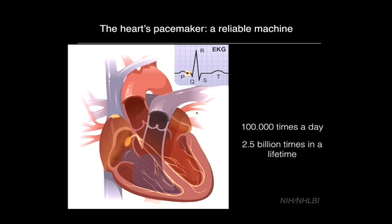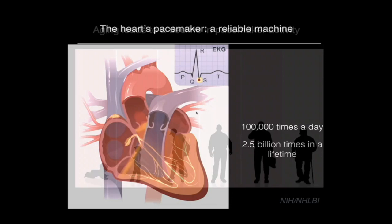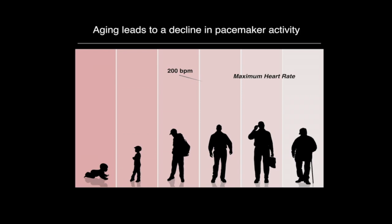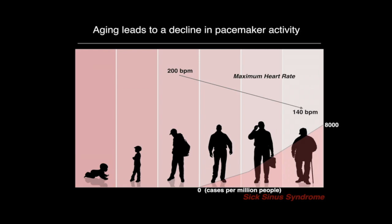This is a very reliable tissue, but unfortunately not exempt from the deleterious effects of aging. Aging causes a decrease in pacemaking rate, which is responsible for the decrease in maximum heart rate that every person experiences as we age. In some people this reduction is so drastic that it leads to the onset of a series of diseases known as sick sinus syndrome, which is responsible for 50 percent of the more than 200,000 artificial pacemakers implanted annually only in the US.